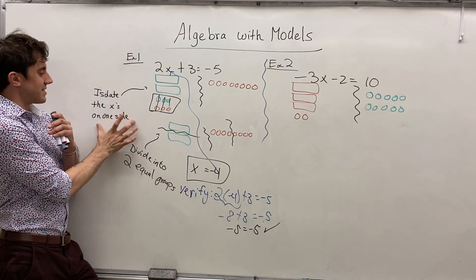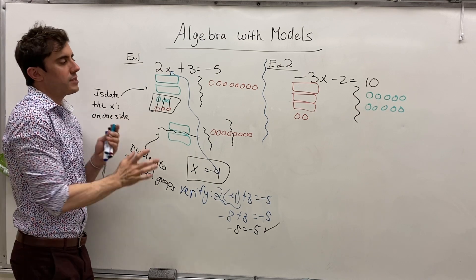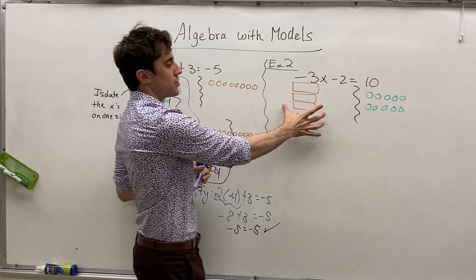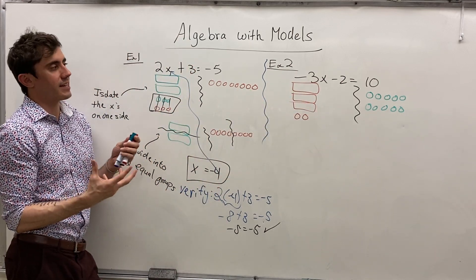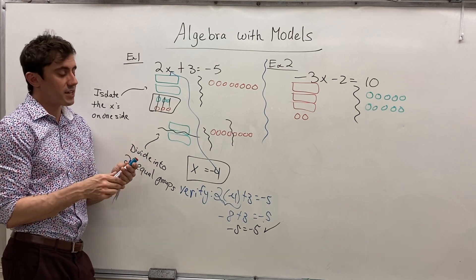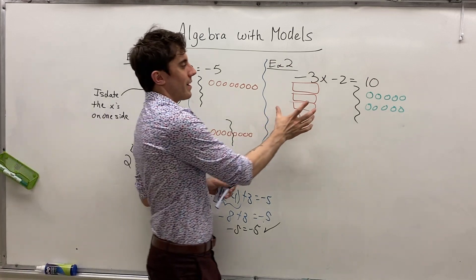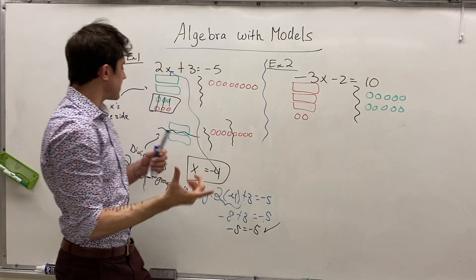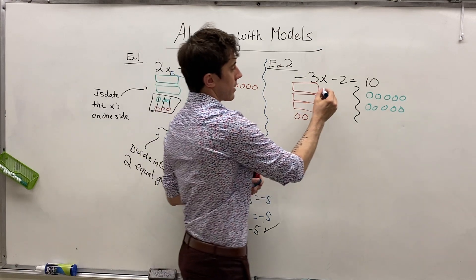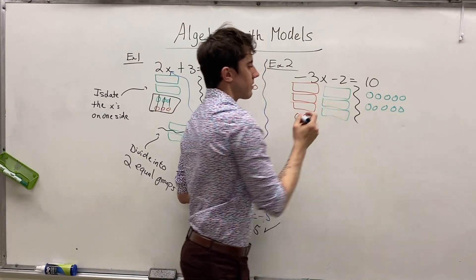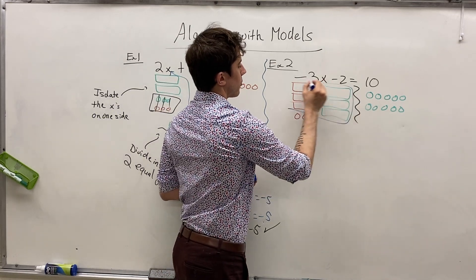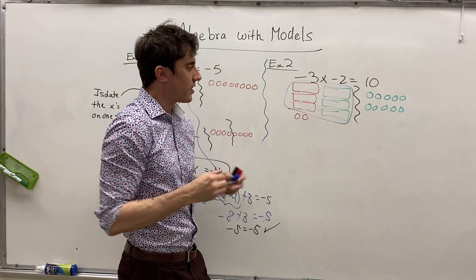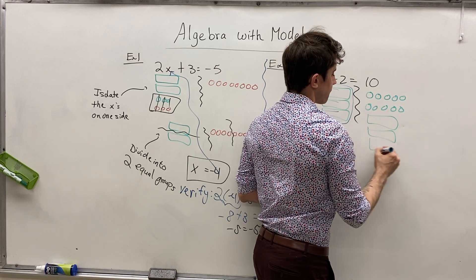Our job is, again, to isolate the x's on one side. However, we also want the x's to be positive, so it's a bit of a give and take as to what we decide to do first — you can't go wrong. I'm going to go ahead and turn the x's positive by moving them to the other side. Since our x's are negative here — they're red — we can create zero pairs with rectangles just as we do with circles. If we add three green rectangles, we'll make three zero pairs with our x's, and the x's will completely cancel out. We always remember to do the same thing on both sides, so we also add three green rectangles on the right side.